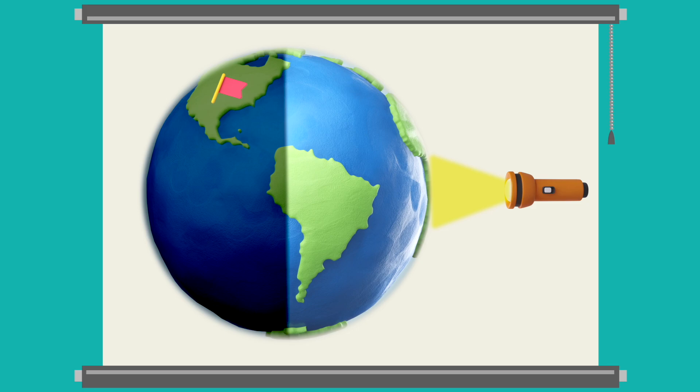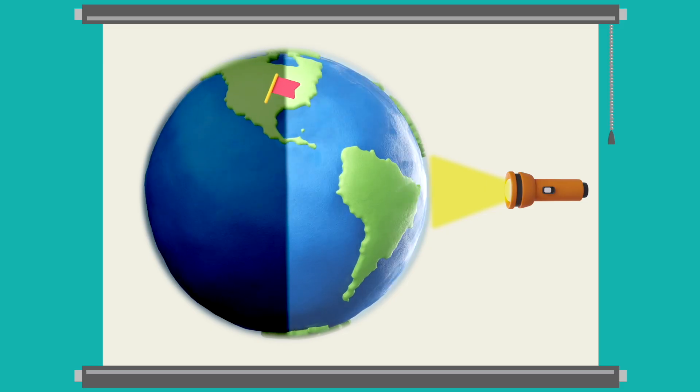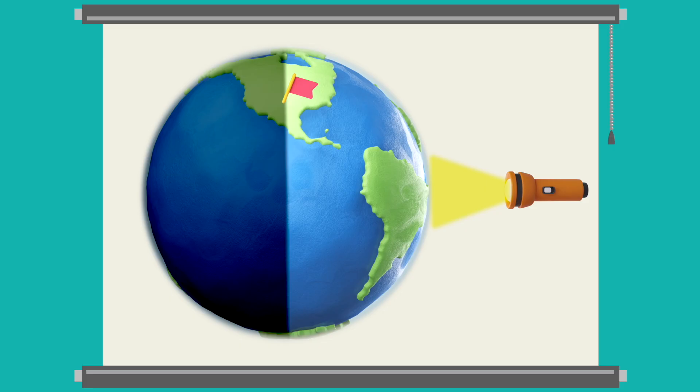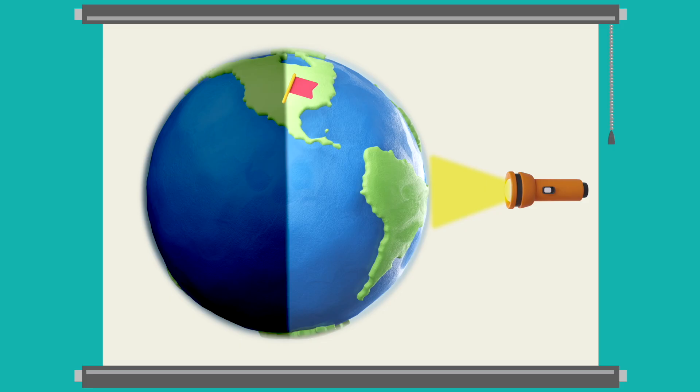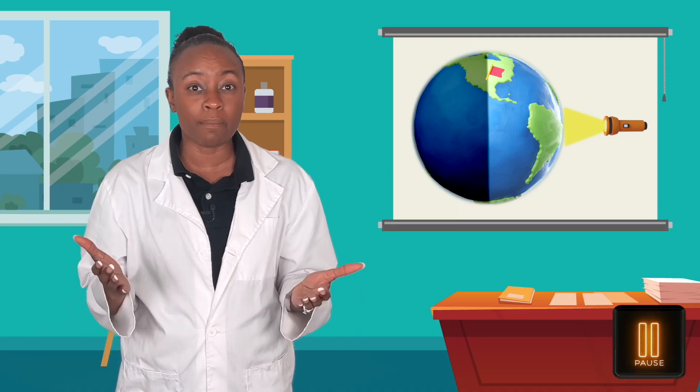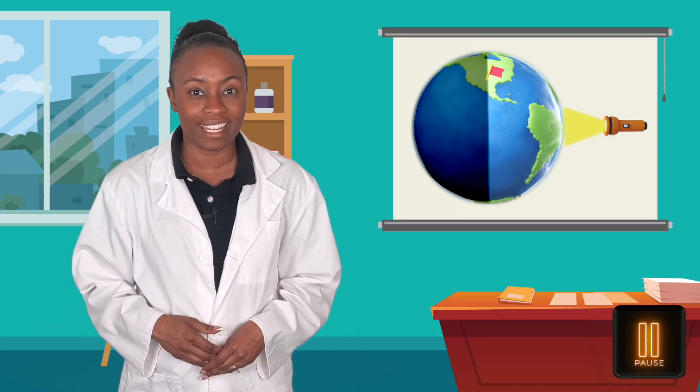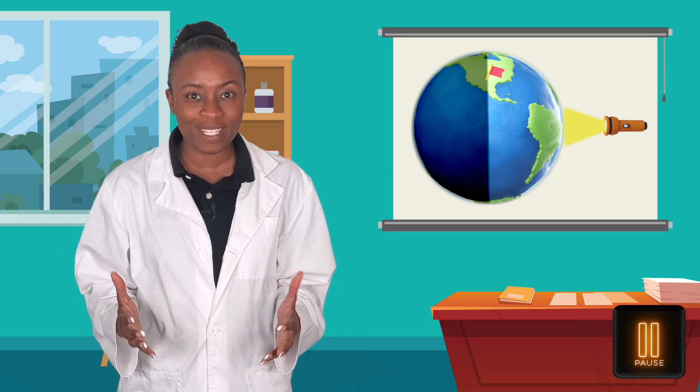Nighttime lasts about as long as daytime because we are facing away from the sun for one half of the earth's rotation. Now, our flag is moving out of the sun's shadow back into the light. What time of day do you think this is? Take a moment to pause and make a prediction. Then, we'll watch what happens when you get back.